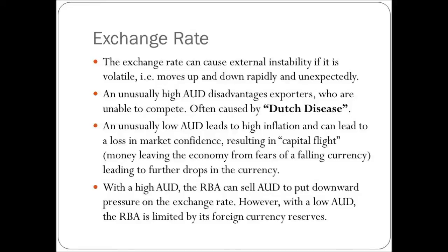Let's have a read of the text for this section — exchange rates. The exchange rate can cause external instability if it is volatile, i.e. moves up and down rapidly and unexpectedly. An unusually high Australian dollar disadvantages exporters who are unable to compete. This is often caused by Dutch disease — if it's caused by a certain sector doing very well, causing the Australian dollar to go up and other exporters are unable to compete as efficiently. We see that at the moment where the mining boom is doing well and manufacturing is not because of a high Australian dollar. And unusually low Australian dollar leads to high inflation and can lead to a loss in market confidence.